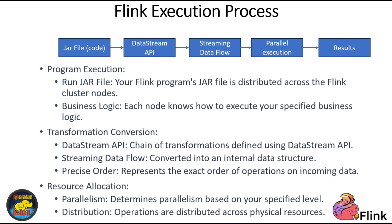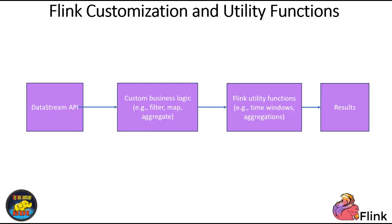When you run your Flink program, the binary of your program — a jar file — is distributed to all nodes in the Flink cluster. Each node knows how to execute the specified business logic. Flink then converts the chain of transformations defined using the Datastream API into an internal data structure known as the Streaming Data Flow. This internal structure represents the precise order of operations that will be applied to the incoming data, and also determines how these operations will be distributed across available physical resources based on the requested level of parallelism.